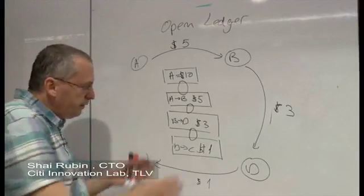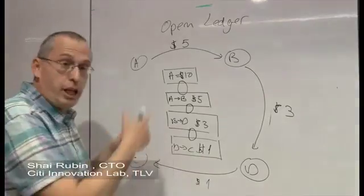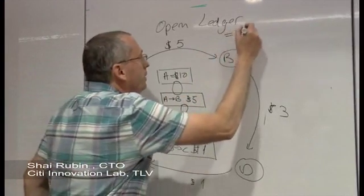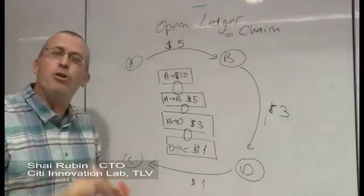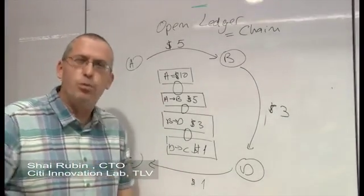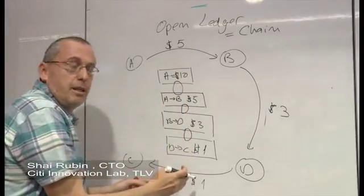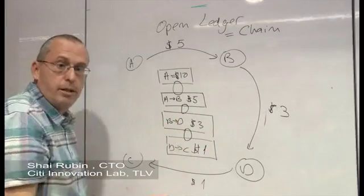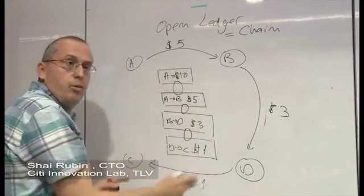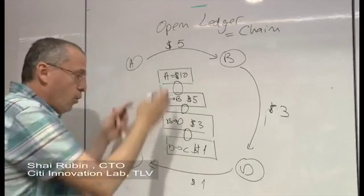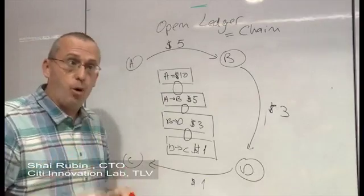So this is the concept of open ledger. It is essentially a chain of transactions, and this is one of the reasons that this is called blockchain. This is a chain of transactions that is open and public to everyone. What it gives us is that everyone on the network can see where the money is, how much money each one has in its pocket.